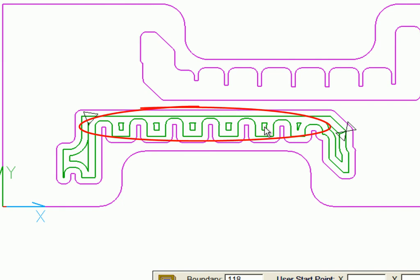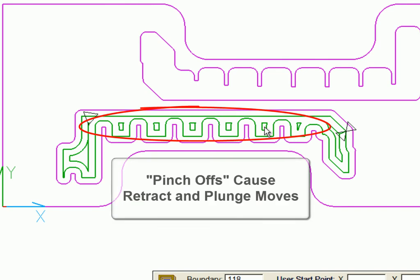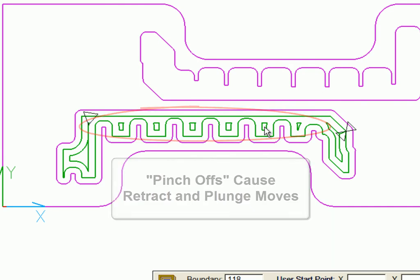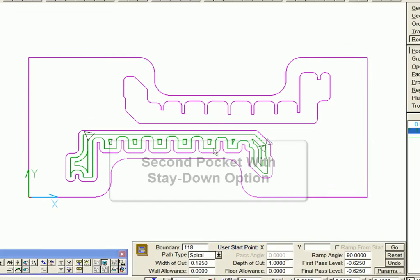When not used, wherever offsets for the geometry being programmed crosses or pinches off, the routine generates a retract and plunge move for each of the discrete areas being machined.